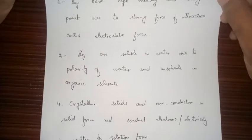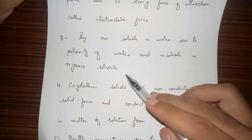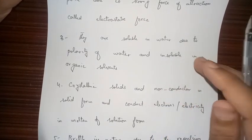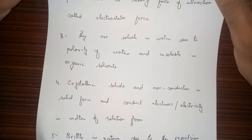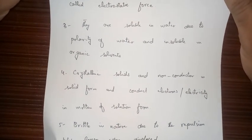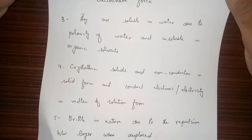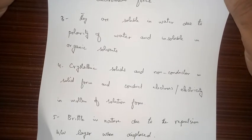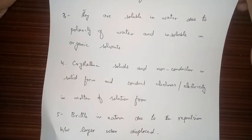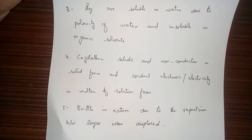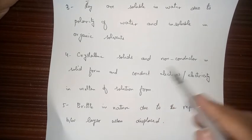Ionic compounds are soluble in water due to the polarity of water, and insoluble in organic solvents. Water has two poles — hydrogen (partial positive) and oxygen (partial negative) — which is why ionic compounds are mostly soluble in water, though some are insoluble.